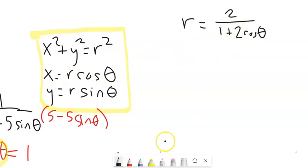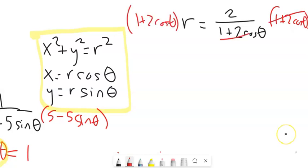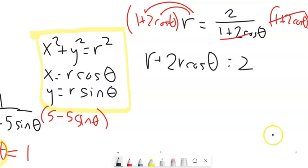So how about I multiply both sides by that denominator. Over here it divides out. Distribute that r into there. And that r cos theta, that's a beautiful thing because that is just an x. So I'm going to replace this right here with an x.